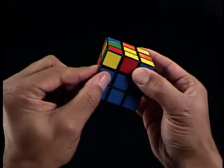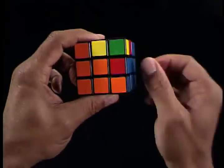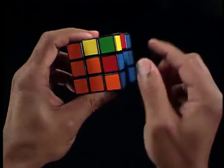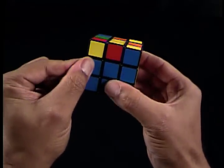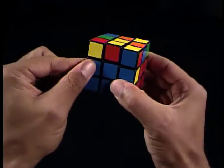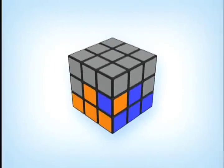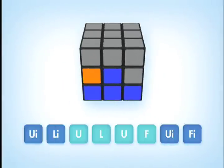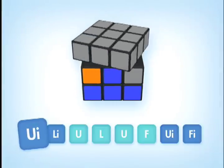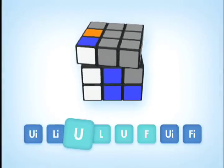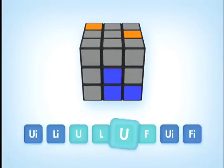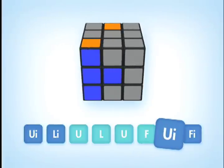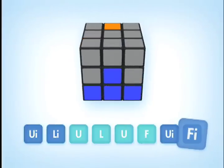Now, if you have an edge piece that's already in the middle layer but in the wrong position, then do either one of the sequence of moves from the solution guide based on where that edge piece is located. This will move that edge piece to the top U-face layer. For example, to move the edge piece out of the left side, we do the move sequence U-I-L-I-U-L-U-F-U-I-F-I.